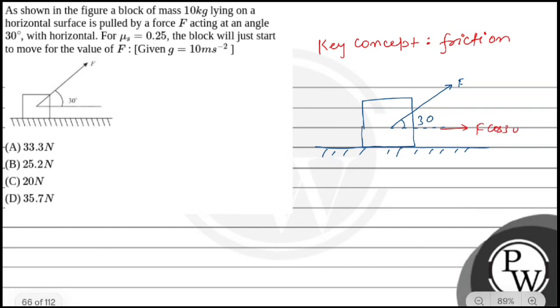The vertical component is F sin 30 degrees. The floor exerts a normal force N perpendicular to the floor, and due to weight, mg acts downward.